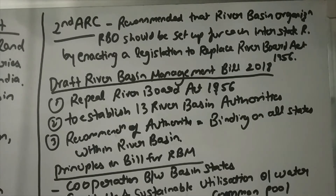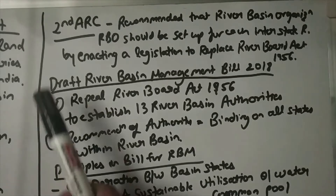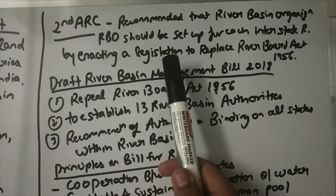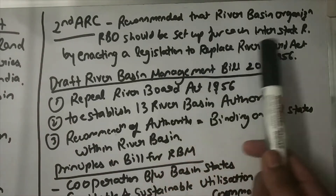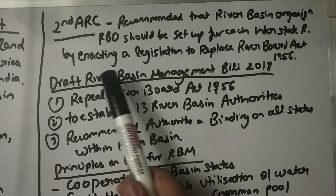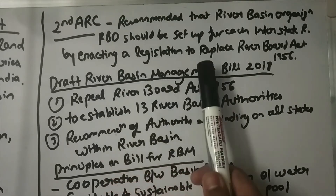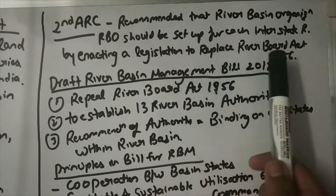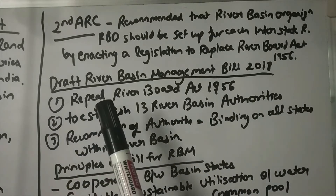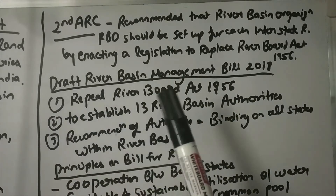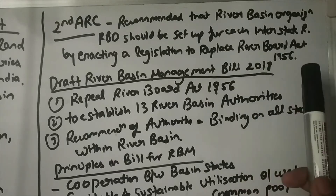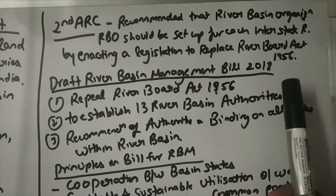The Second ARC recommended that river basin organizations should be set up for each interstate river by enacting legislation to replace the River Board Act of 1956.